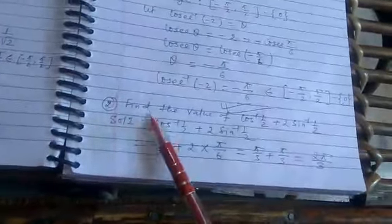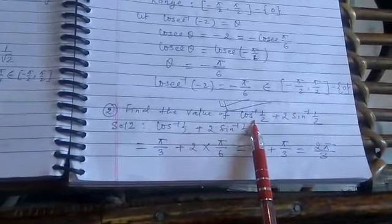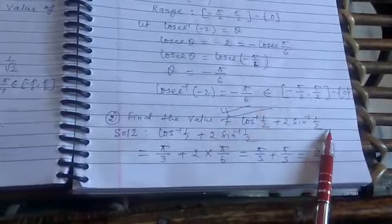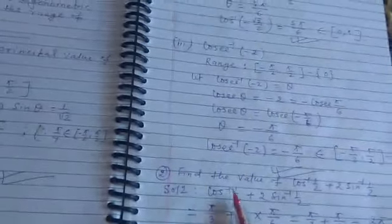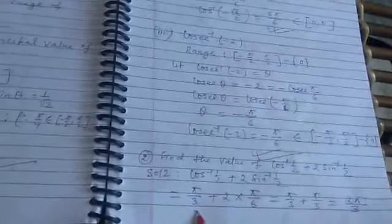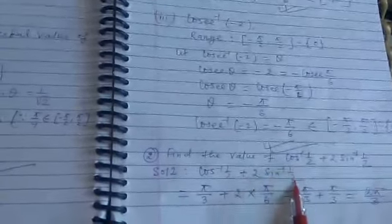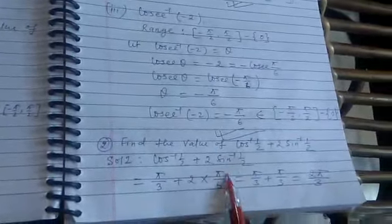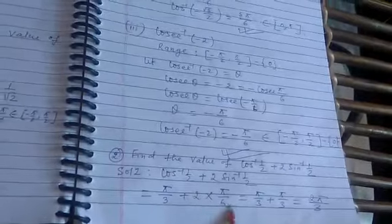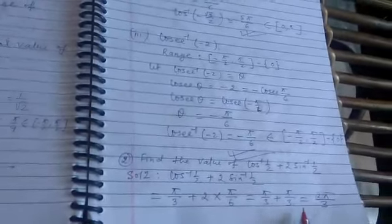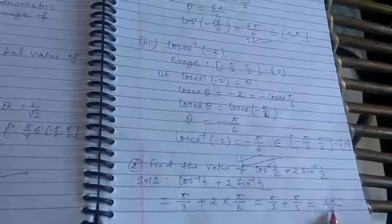The next question is to find the value of cos⁻¹(1/2) + 2sin⁻¹(1/2). Using principal values: cos⁻¹(1/2) = π/3, since cos(π/3) = 1/2. And sin⁻¹(1/2) = π/6, since sin(π/6) = 1/2. So the expression becomes π/3 + 2×(π/6) = π/3 + π/3 = 2π/3.